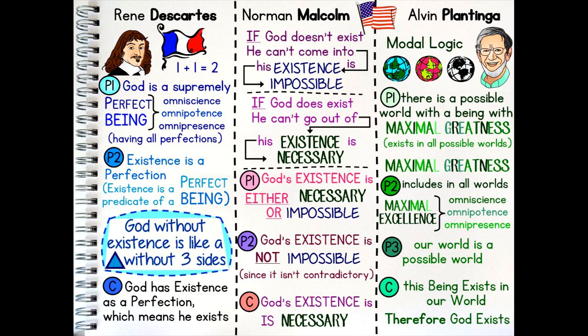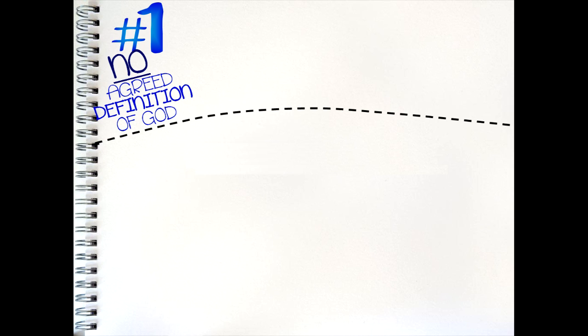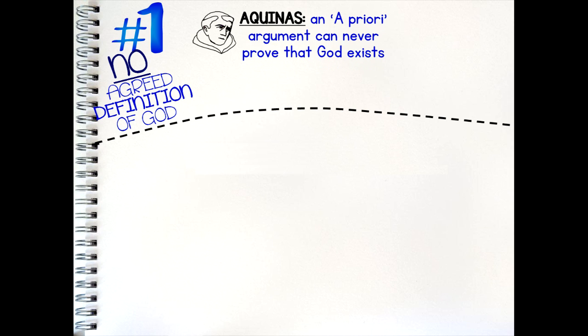Various criticisms of the ontological argument have been made, and they can be grouped into approximately three categories, although there is some overlap between these ideas. Firstly, the ontological arguments rely on having an agreed definition of God, but various philosophers have said that we cannot know fully what God's essence is, and even if we did we could not know for certain that we had got it right. Thomas Aquinas, despite being a theist, felt this was why an a priori argument could never prove God's existence. Instead, we can only establish God's existence by looking for a posteriori evidence.